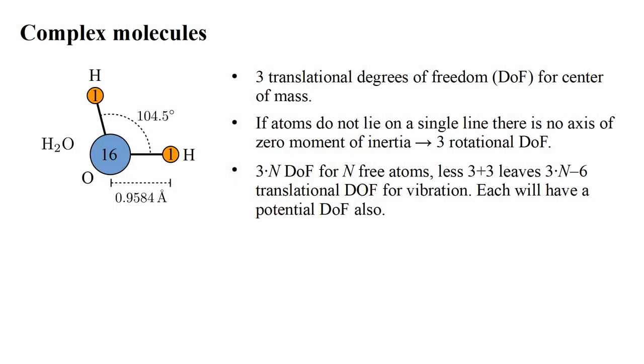For vibration, we can reason as follows. If the n atoms in a molecule were unbound, there would be three n translational degrees of freedom. We have already associated three degrees of freedom with translation of the center of mass and three degrees of freedom with rotation about the center of mass. This leaves three n minus six translational degrees of freedom to describe the vibration. Each of these will have an associated potential degree of freedom also.